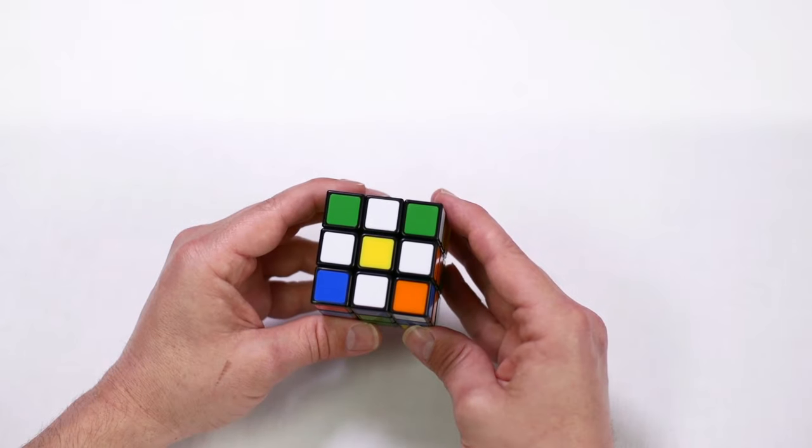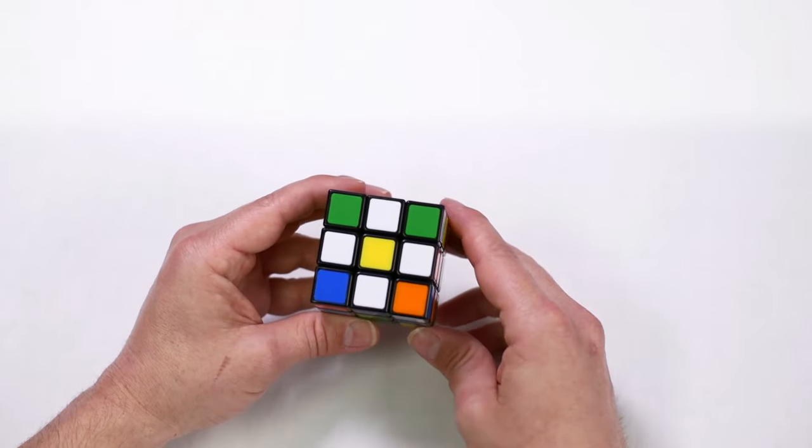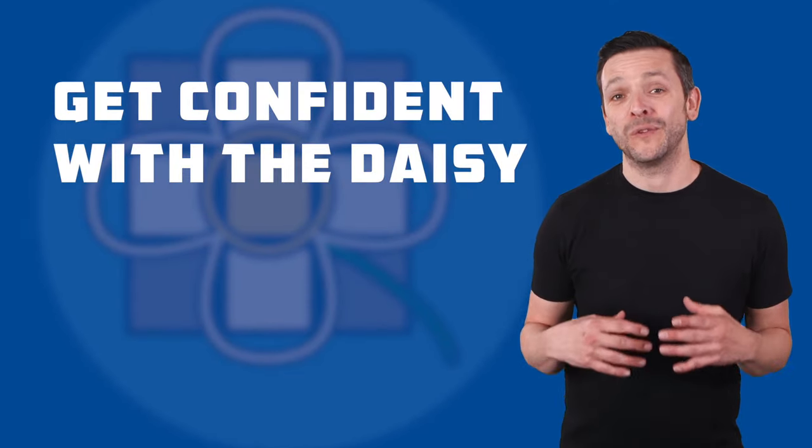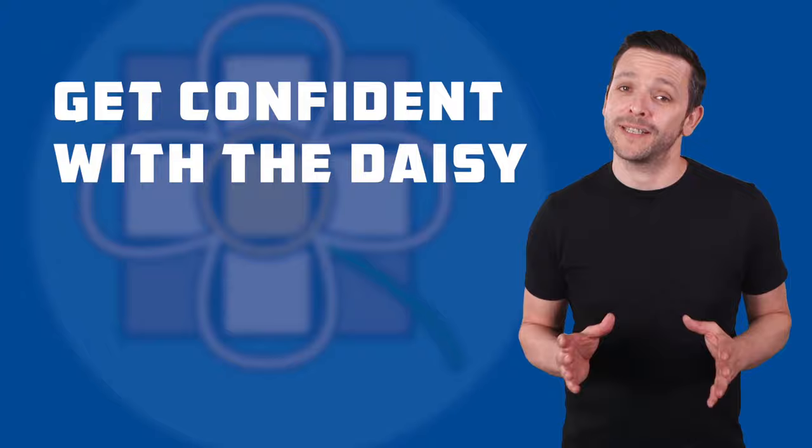When your Rubik's Cube has a daisy that looks like this, you can move on to step two. Have a little practice yourself and try and get confident with doing the daisy before moving on to step two.